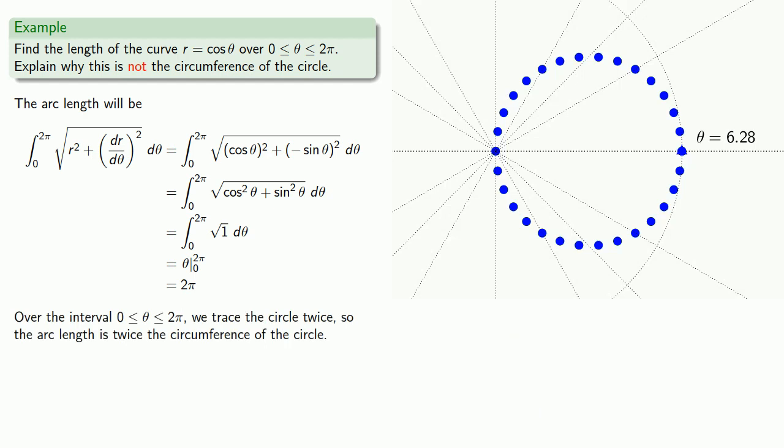So our arc length is twice the circumference of the circle. There's no contradiction here. Even though the graph is that of a circle, our curve traces the circle twice. And so we do get twice the circumference of the circle as our arc length.